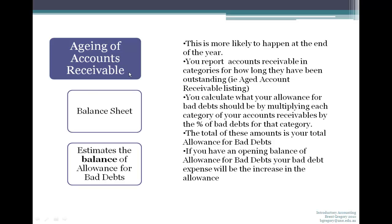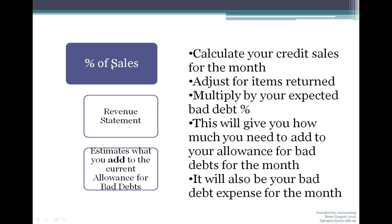Let's look at how each of these works. Firstly, the percentage of sales method — also known as the revenue statement method — estimates what you add to your current allowance for bad debts. To do this, you calculate your current credit sales for the month, making sure that's adjusted for any items returned, so you're just looking at your net credit sales.